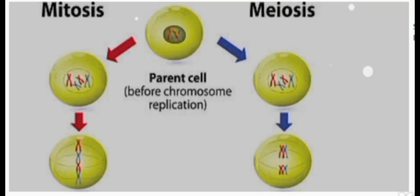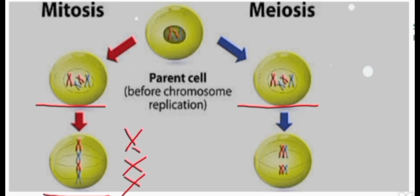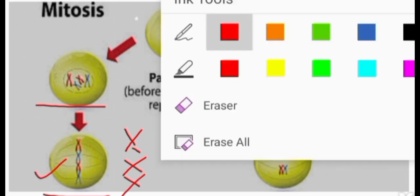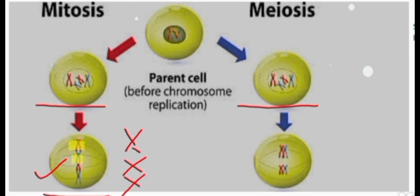Here we will study the main differences between mitosis and meiosis phases. In mitosis, single chromosomes are arranged in the form of single chromosomes at the metaphase plate, as you can see in this diagram.